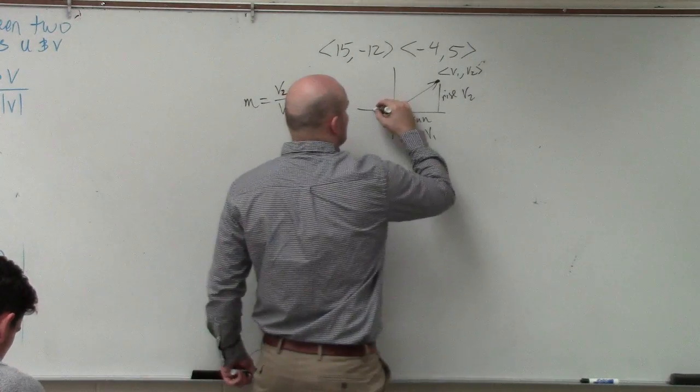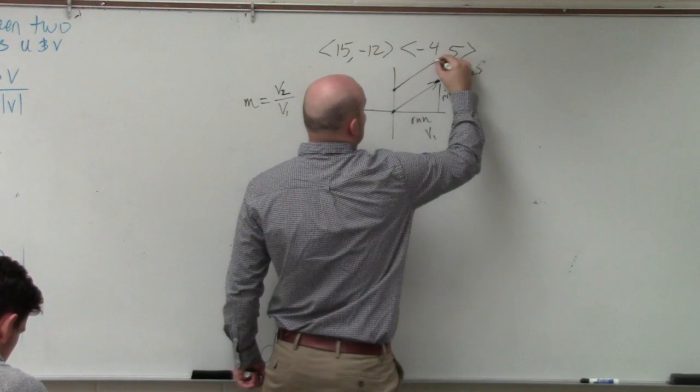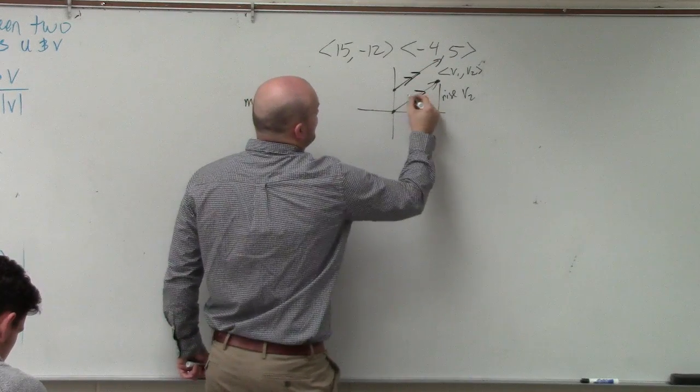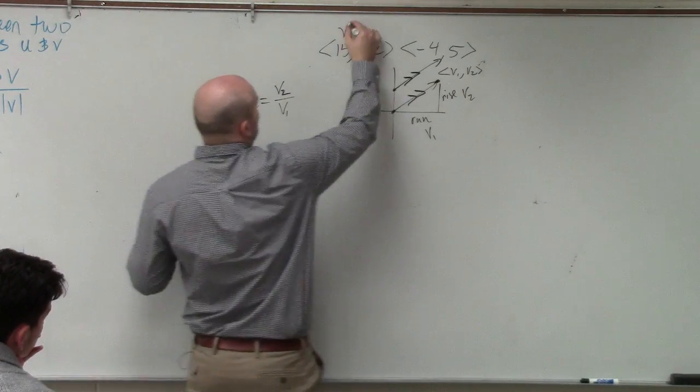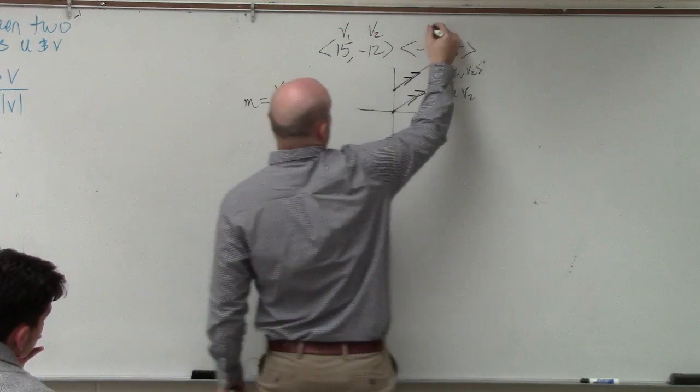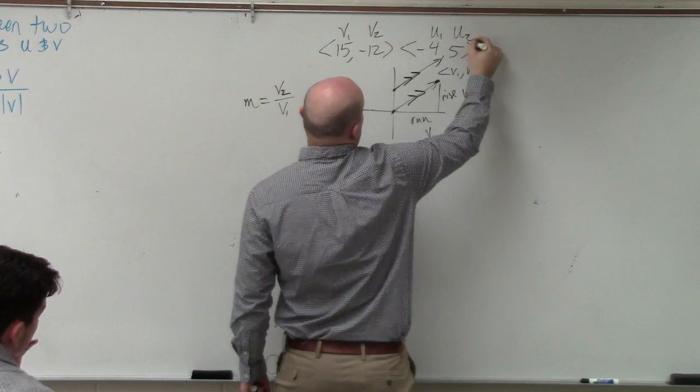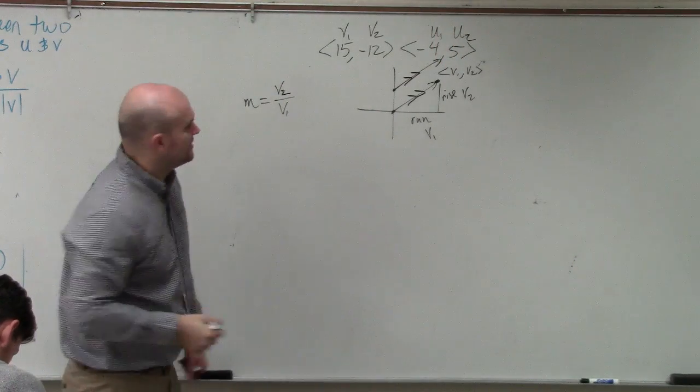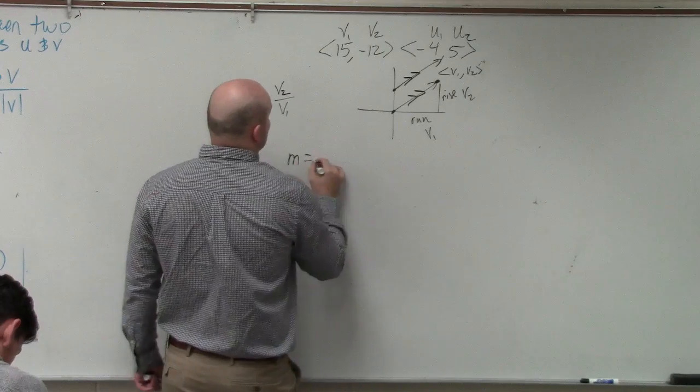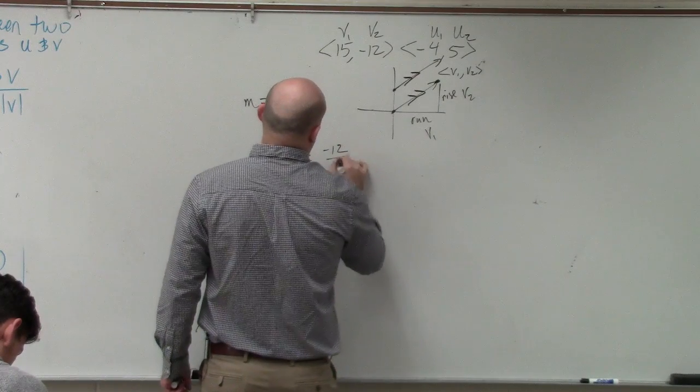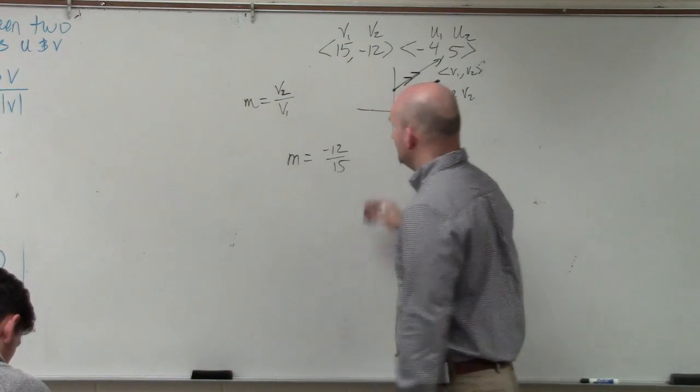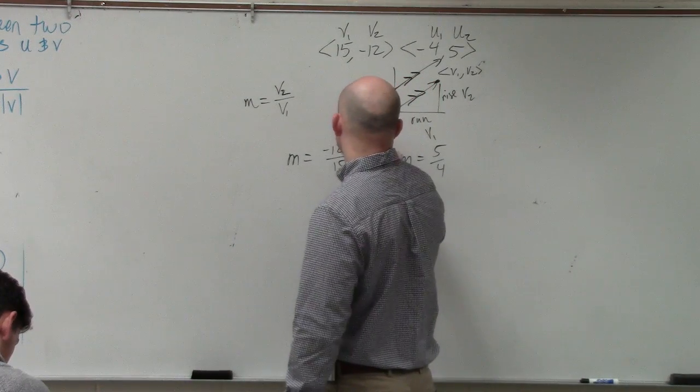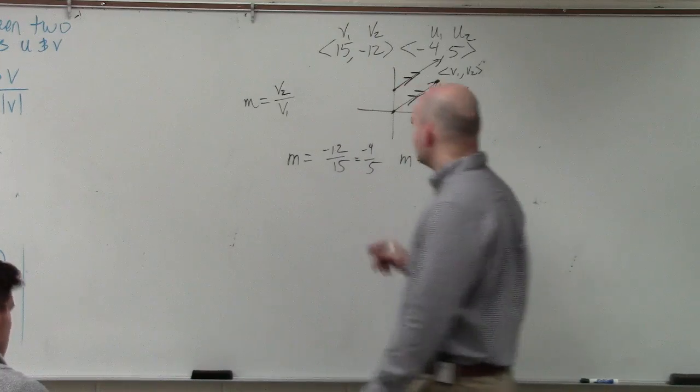And if the slopes are exactly the same, then the vectors are parallel, correct? So let's do v1 over v2. And I'll do u1 over u2, because I'll call those two different vectors. So m equals negative 12 over 15, and m equals 5 over 4. Well, you can reduce this to negative 4 over 5, and this one to 5 over 4.